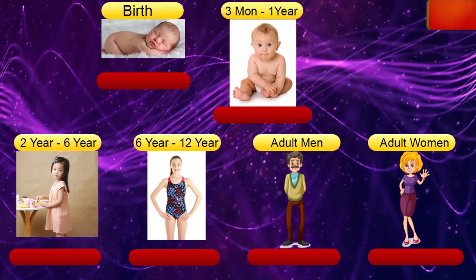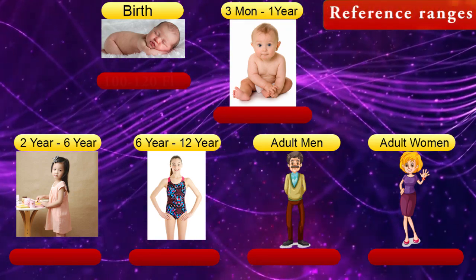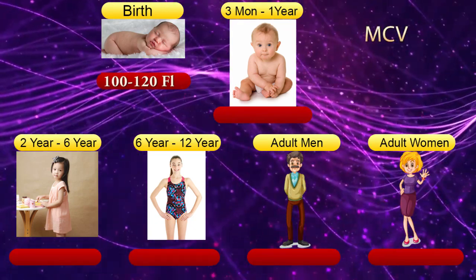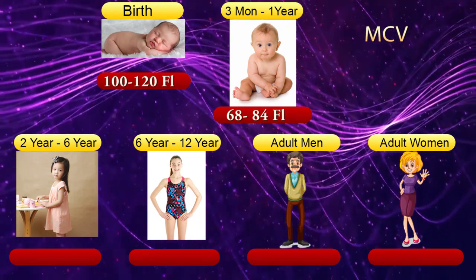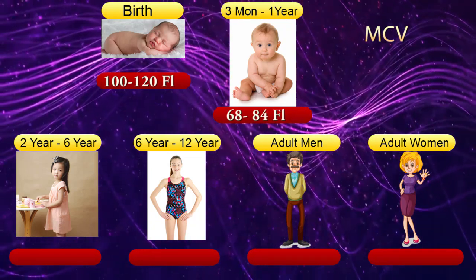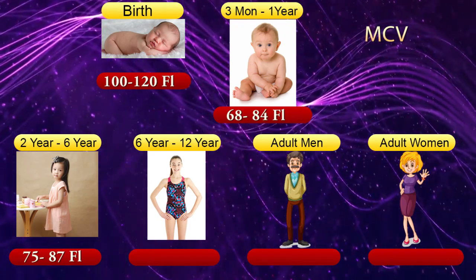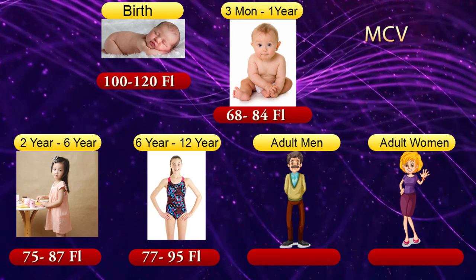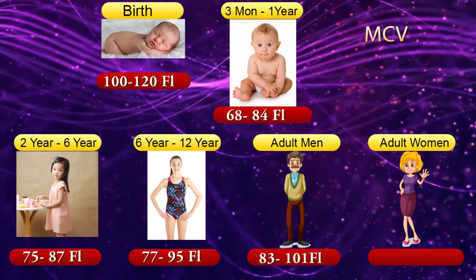Mean corpuscular volume (MCV) reference ranges. At birth: 100–120 femtoliters. From 3 months to 1 year: 68–84 femtoliters. From 2 to 6 years: 75–87 femtoliters. From 6 to 12 years: 77–95 femtoliters. Adult men: 83–101 femtoliters.